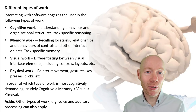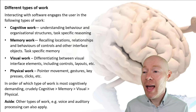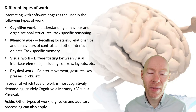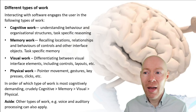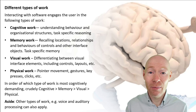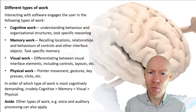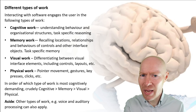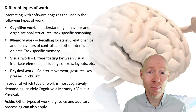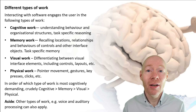When we think about the types of work that our users engage in whilst they're using our applications, you can see four main categories. Cognitive work is work where the user has to understand the behaviour, the organisational structures, and the task-specific reasoning behind whatever they are doing. When users have to look at something and work out what is the behaviour of this, what is the structure of that — that really should be unnecessary work from the user's point of view.